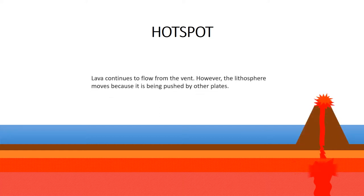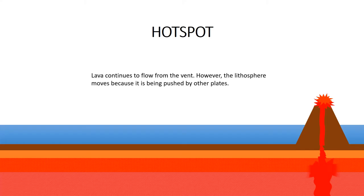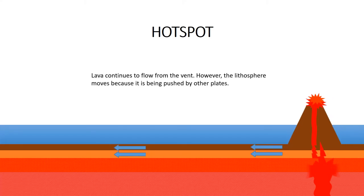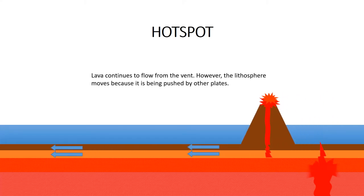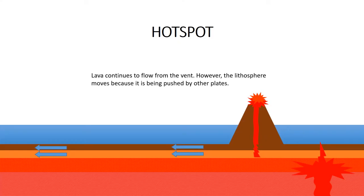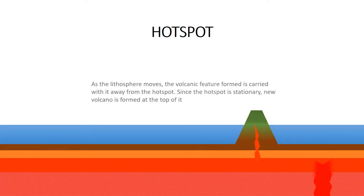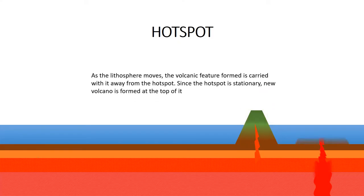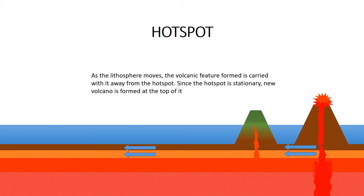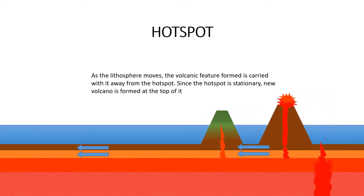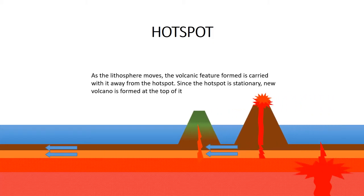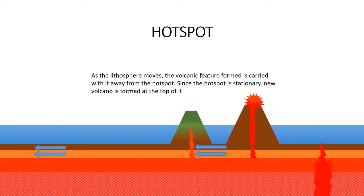Lava continues to flow from the vent. However, the lithosphere moves because it is being pushed by other plates. As the lithosphere moves, the volcanic feature formed is carried with it away from the hot spot. Since the hot spot is stationary, a new volcano is formed at the top of it.